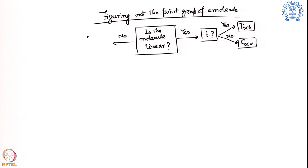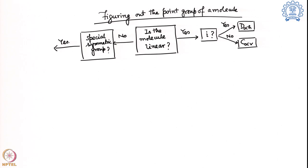If the molecule is not linear, we ask: does it belong to any special symmetric group? By special symmetric group I mean tetrahedral or octahedral, the most common ones. If the answer is yes, just by looking at the structure we can figure out whether it is tetrahedral or octahedral and determine its point group. If the answer is no, that means it does not belong to any cubic or linear group, so the only options remaining are single axis rotation, non-rotational groups, or dihedral groups.